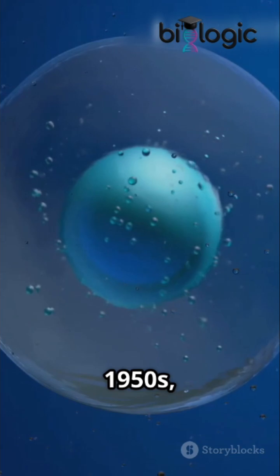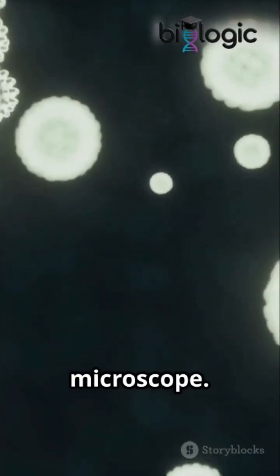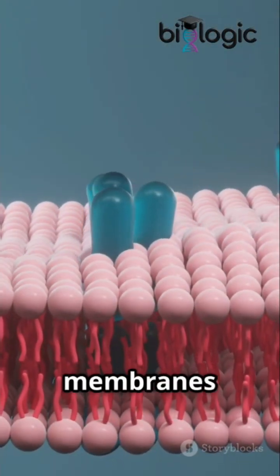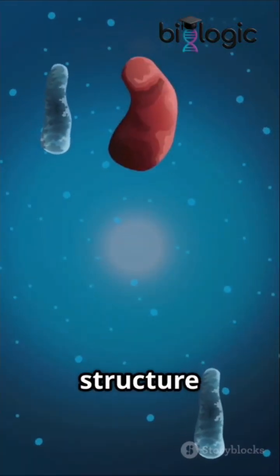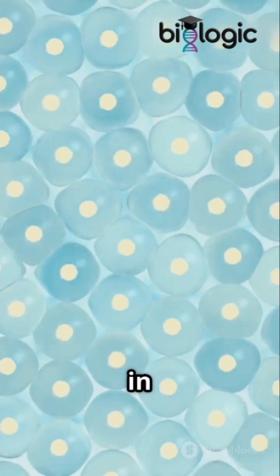In the 1950s, J.D. Robertson studied membranes under an electron microscope. He proposed the unit membrane model, stating that all biological membranes share the same trilaminar structure: two dark protein layers and a light lipid layer in between.